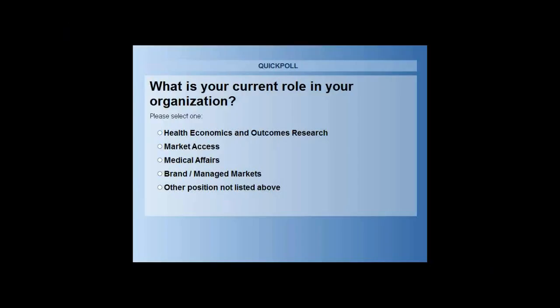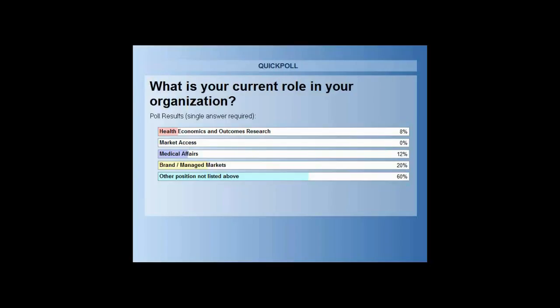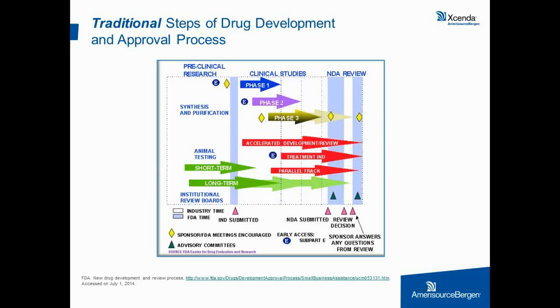At this point we have the first poll question for the audience: what is your current role in your organization? Your options are health economics and outcomes research, market access, medical affairs, brand or managed markets, or other. The results show that 60% said another position not listed above, followed by 20% saying brand or managed markets, 12% medical affairs, and 8% health economics and outcomes research.